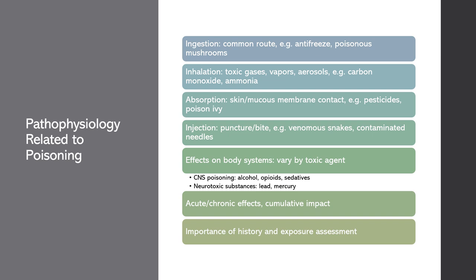Absorption occurs when a toxic substance comes into contact with the skin or mucous membranes and enters the body. Common examples include pesticides or industrial chemicals like organophosphates, which can cause muscle weakness, seizures, and respiratory distress. Another example is poison ivy, which contains a toxic substance called urushiol, which can cause an itchy rash and skin inflammation.